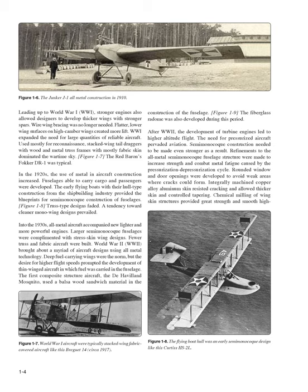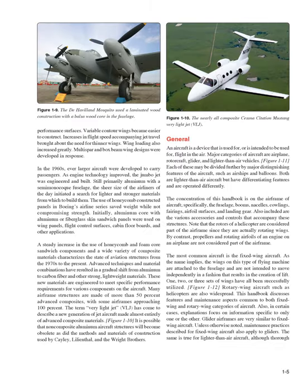After World War II, the development of turbine engines led to higher altitude flight. The need for pressurized aircraft pervaded aviation. Semi-monocoque construction needed to be made even stronger as a result. Refinements to the all-metal semi-monocoque fuselage structure were made to increase strength and combat metal fatigue caused by the pressurization-depressurization cycle. Rounded window and door openings were developed to avoid weak areas where cracks could form. Integrally machined copper alloy aluminum skin resisted cracking and allowed thicker skin and controlled tapering. Chemical milling of wing skin structures provided great strength and smooth high-performance surfaces. Variable contour wings became easier to construct. Increases in flight speed accompanying jet travel brought about the need for thinner wings, and wing loading also increased greatly. Multi-spar and box-beam wing designs were developed in response.